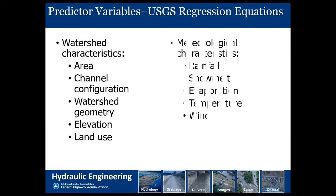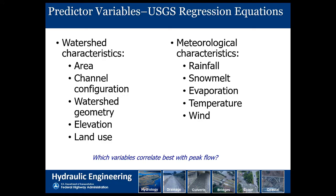And land use — is it forest, urban, or agriculture? All of these watershed characteristics impact the result. There are also meteorological characteristics we look at in some equations: rainfall, of course, snow melt, evaporation, temperature, and wind. What would be the best variables to help figure out the flow? The biggest one in USGS regression equations is area. Slope also appears in a lot of these equations. All these other characteristics you may or may not see depending on where you are in the country.